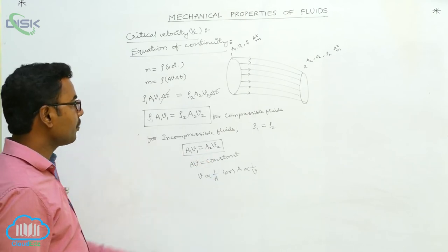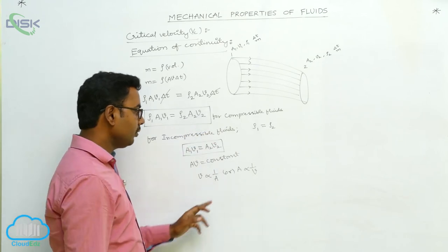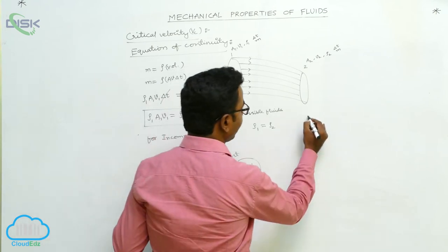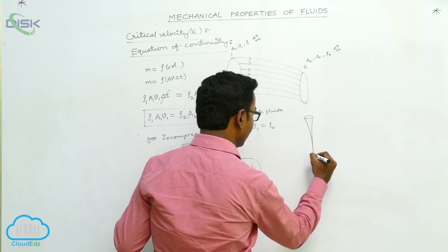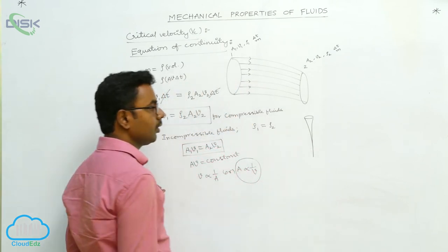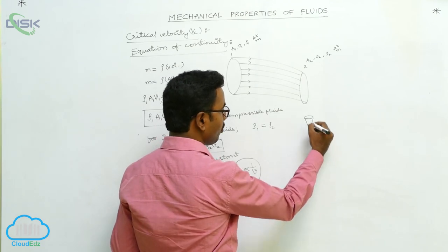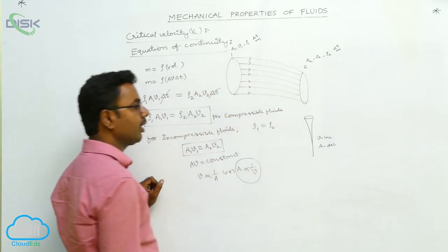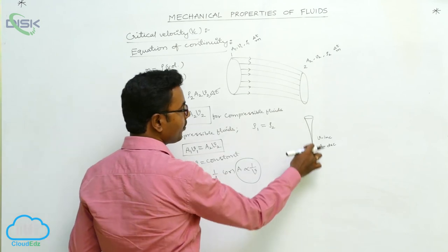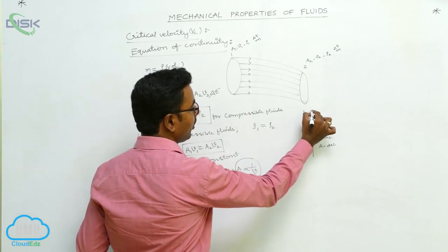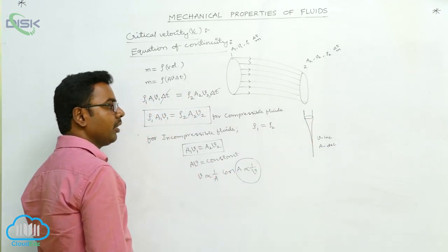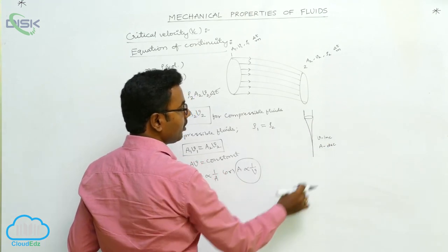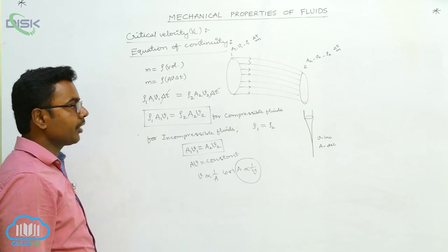We can apply this in daily life. Area is inversely proportional to the velocity of the fluid. When a tap is opened, as the water comes down, its cross-sectional area gradually decreases. This happens because as water descends, its velocity increases due to gravity, and according to the equation of continuity, as velocity increases, area decreases. That is why the flow of water becomes narrow as it is released from a tap — this is one application of the equation of continuity.